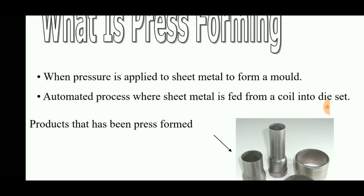This process is automated and sheet is fed from a coil into a die set. The material that is inserted takes the shape of the die, so we can make many designs in the die to get a desired component.